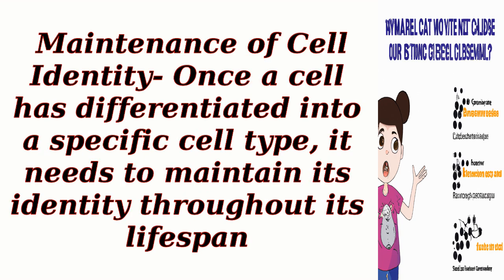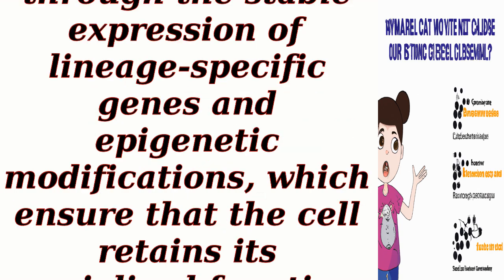Maintenance of cell identity: Once a cell has differentiated into a specific cell type, it needs to maintain its identity throughout its lifespan. This is achieved through the stable expression of lineage-specific genes and epigenetic modifications, which ensure that the cell retains its specialized functions and characteristics.